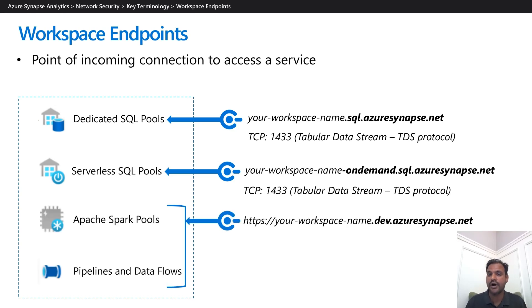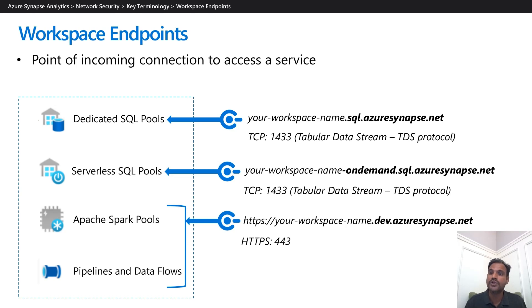The development endpoint is used for accessing the Apache Spark pools and the pipeline resources in the workspace. This endpoint accepts connections on HTTPS port 443. You can connect to this endpoint using any REST API client or .NET SDKs to submit Spark jobs or to run pipeline jobs programmatically.